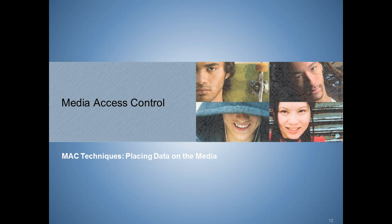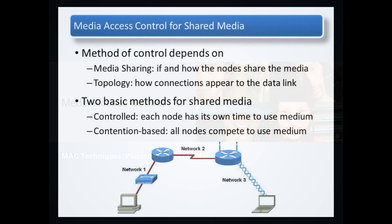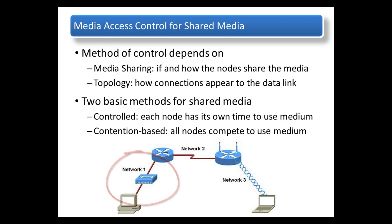The method to control how the data link layer accesses the medium is determined by the way it sees the network logically and whether or not the medium is shared. Any number of media access control techniques might be appropriate. The data link layer would see Network 1 as implementing a multi-access or bus topology. On a multi-access topology, each node on the network will compete to use the medium in a non-deterministic fashion — each station can transmit at any time, hence collisions will exist. Assuming this network was designed using the Ethernet standard, the data link layer will use CSMA/CD to manage collisions when they occur.